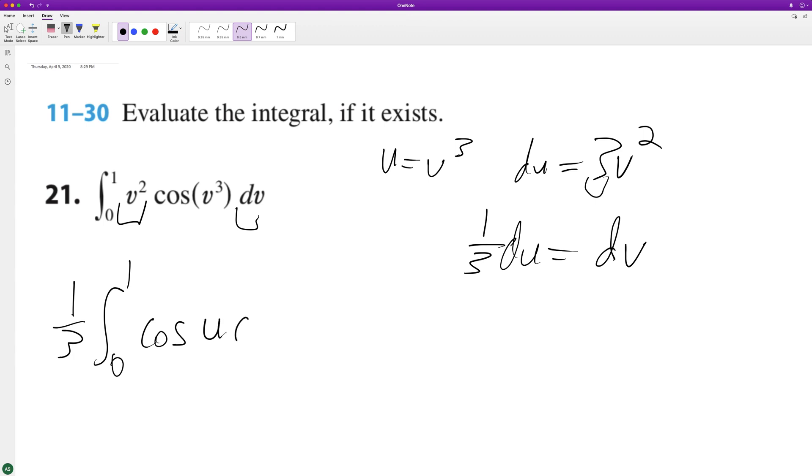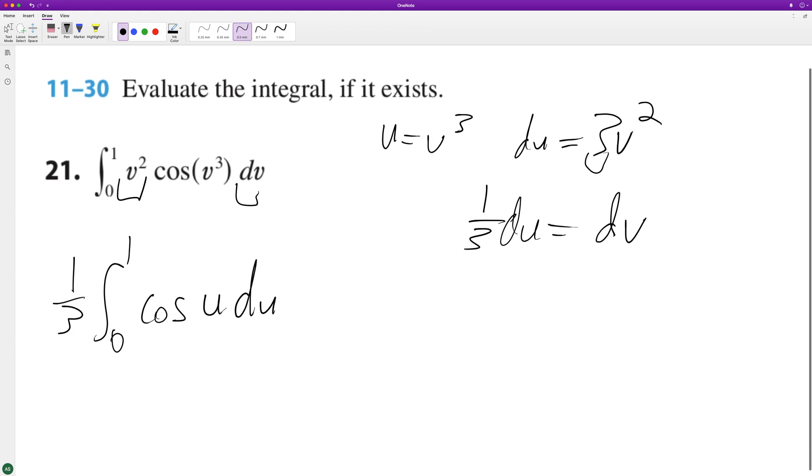When we integrate this, what we end up with is 1/3 times—the integral of cosine is going to be just sine of u—and then we just substitute back in.